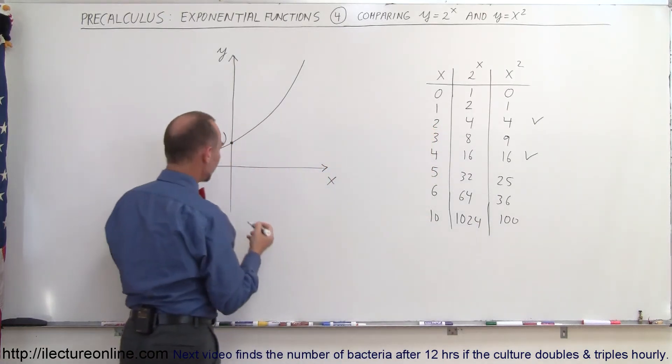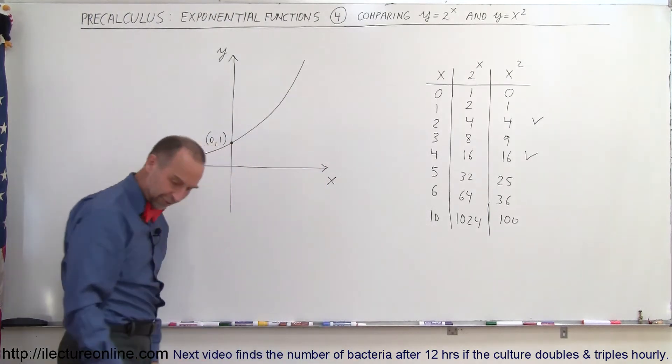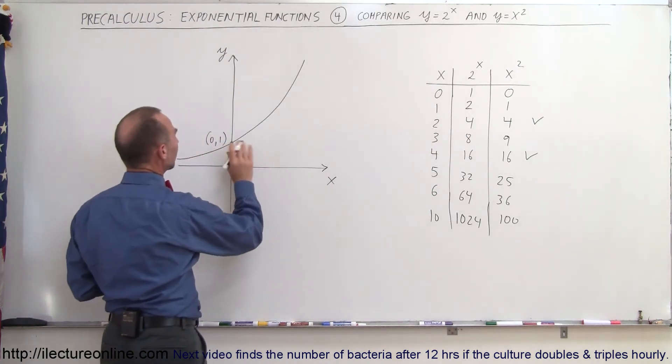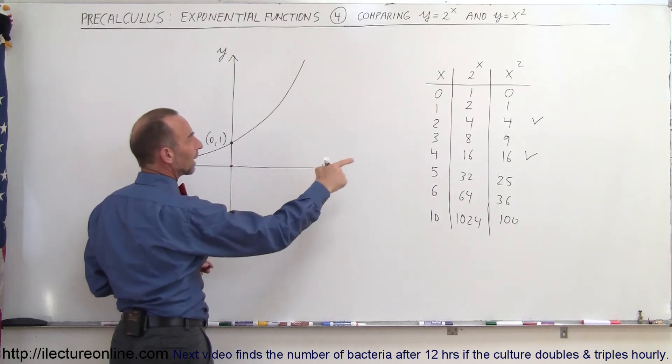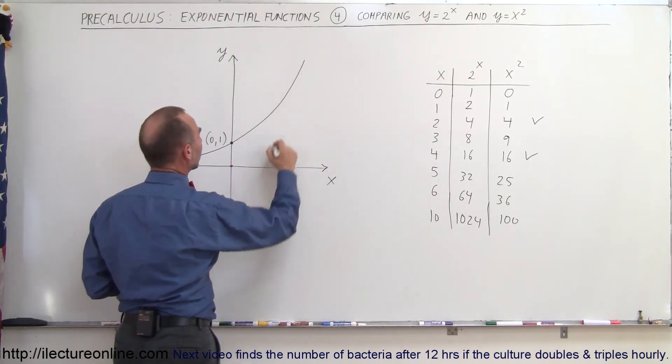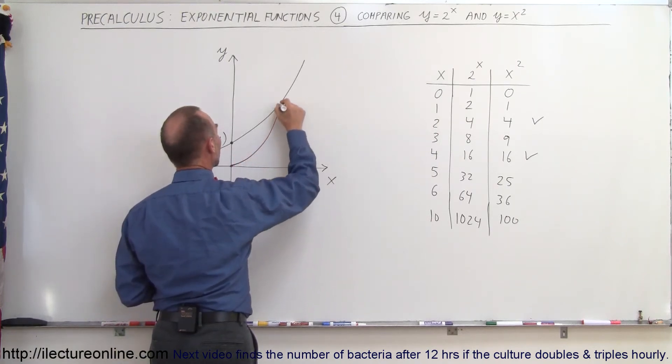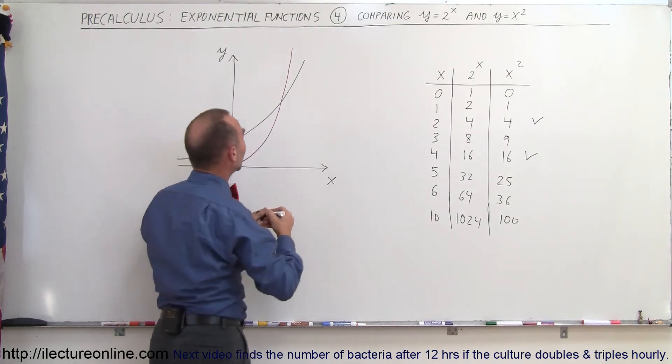So if we were to graph that, you can see that, let me get a different color here. So you can see that when x equals 0, the quadratic function is 0. When x is equal to 4, then they're equal in value. Then as x gets larger, initially the quadratic function gains strength, so to speak, becomes larger much more quickly.